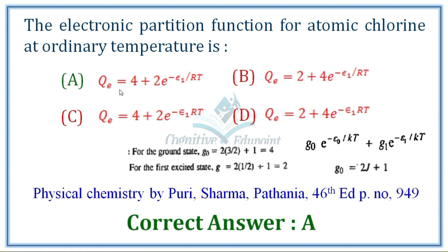So, A is the correct answer: 4 plus 2 into e power minus e1 divided by RT.